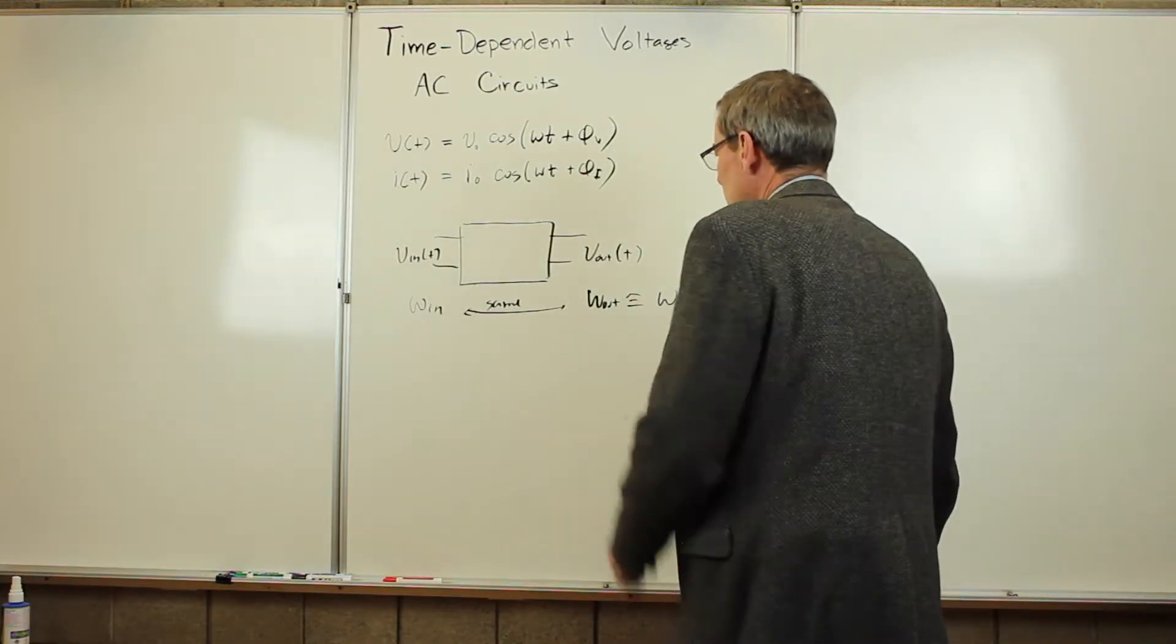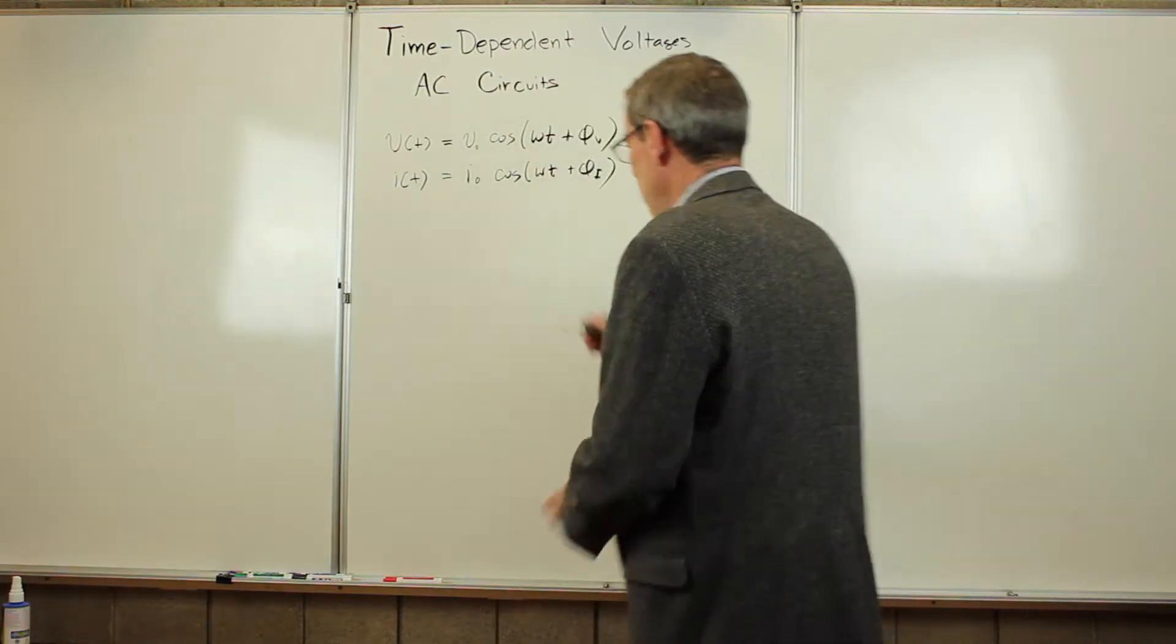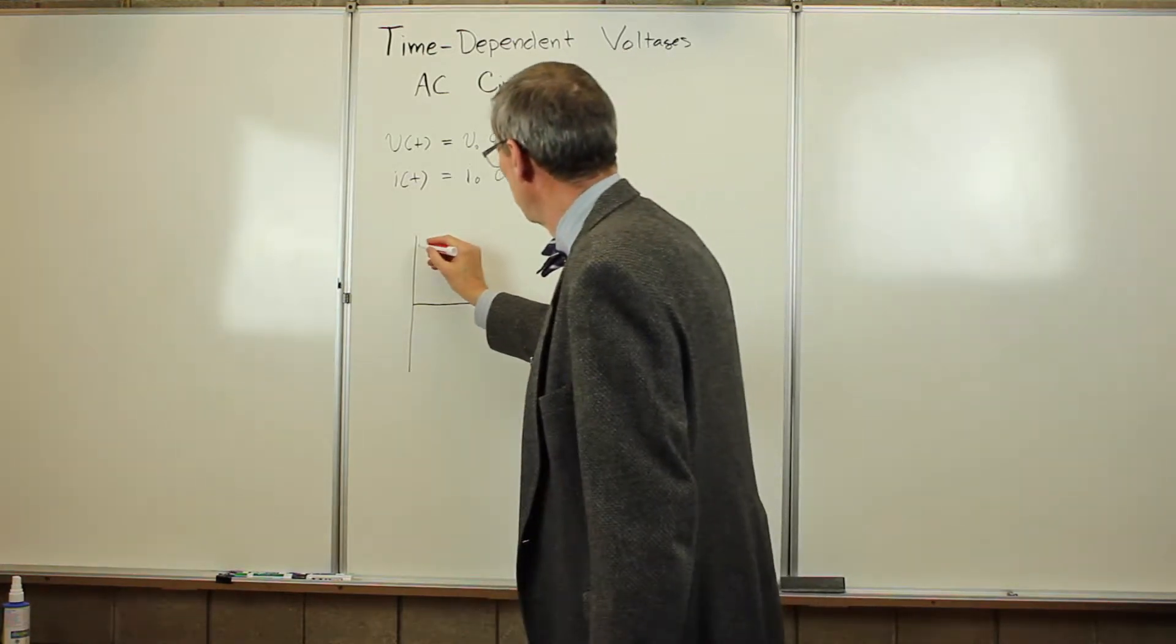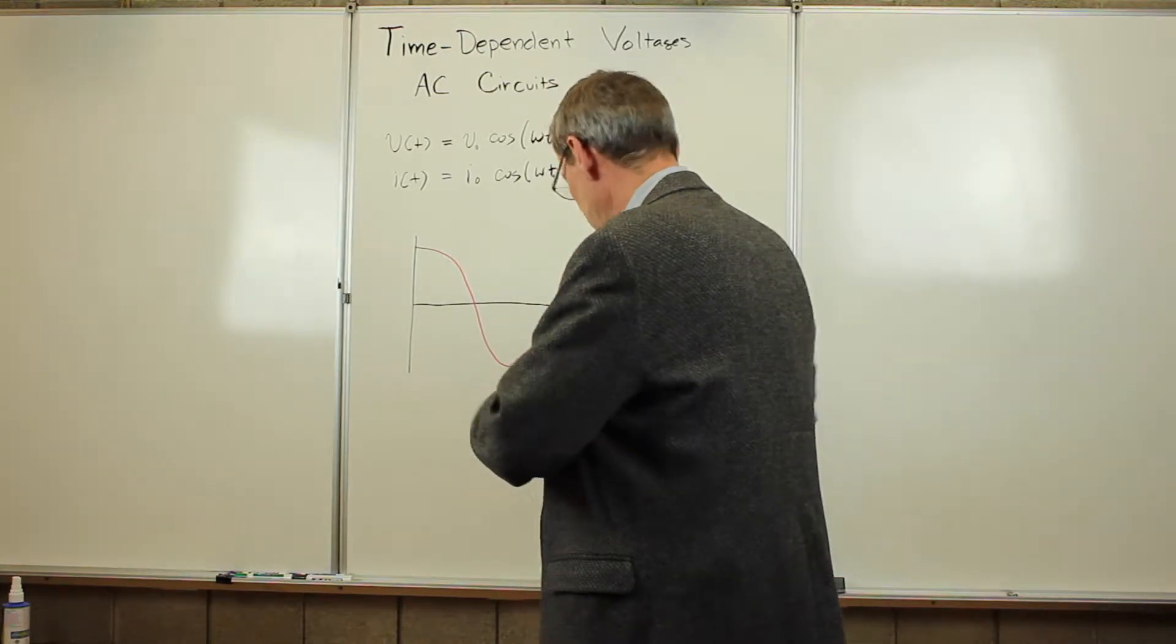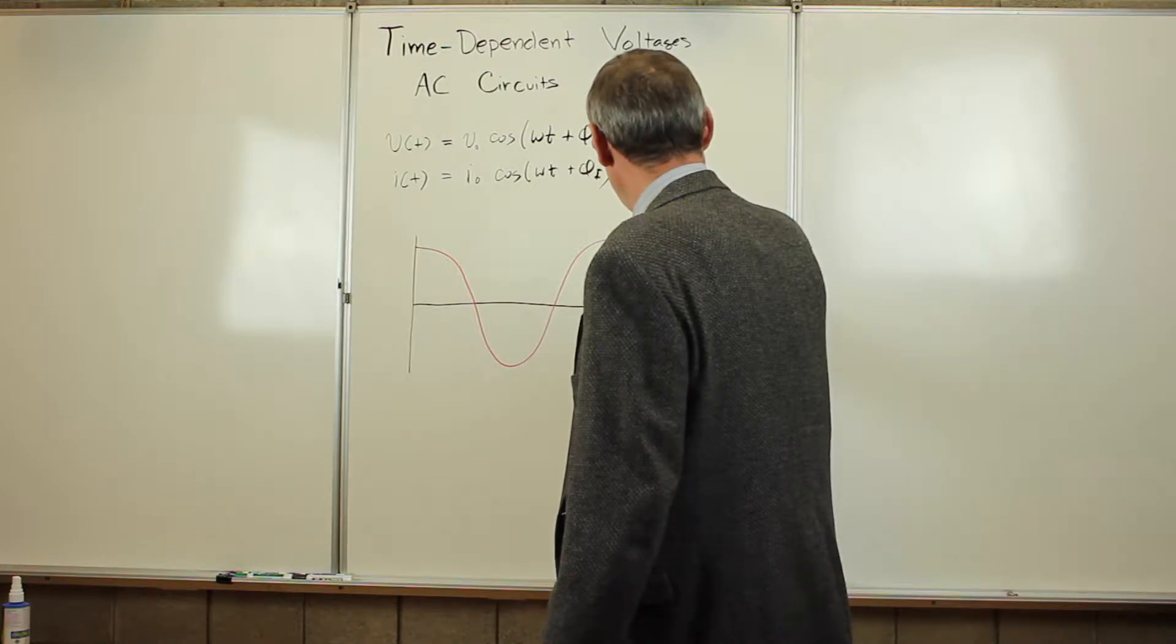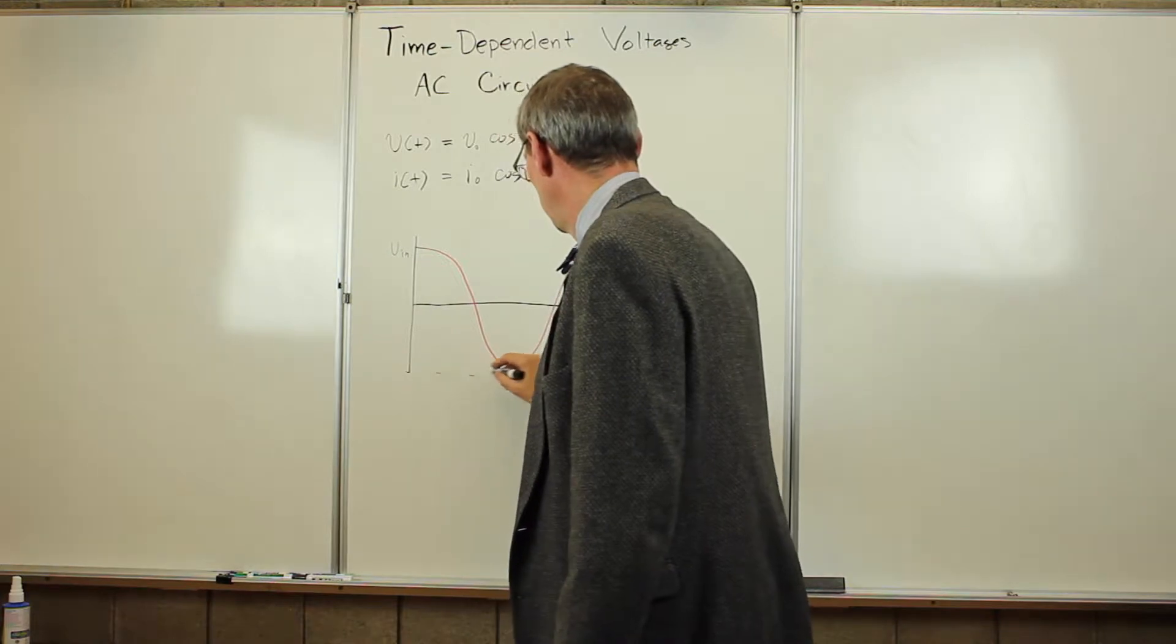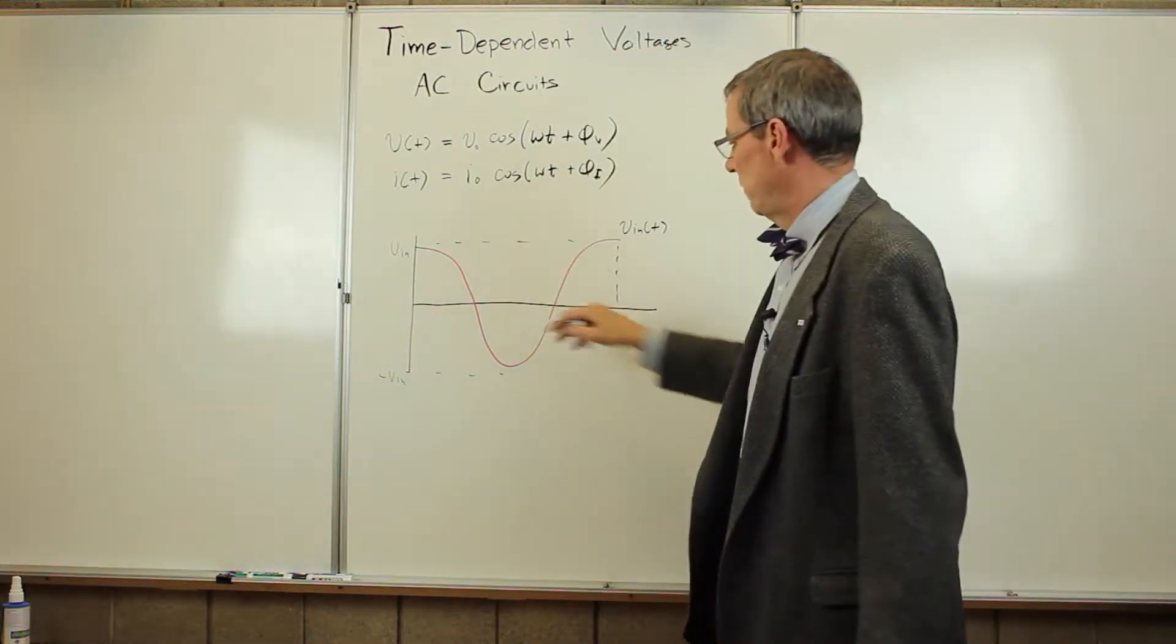And we can look at this here. Let's take that circuit and draw a cosine function. Let's have some input voltage which comes in. So here is our Vin of t. There's one period. There is amplitude Vin minus Vin. So there's the input voltage as a function of time.